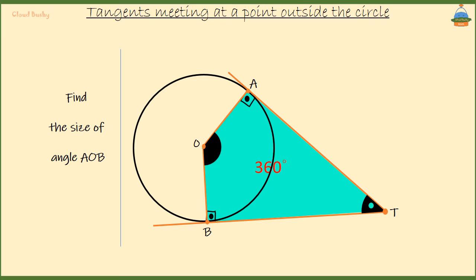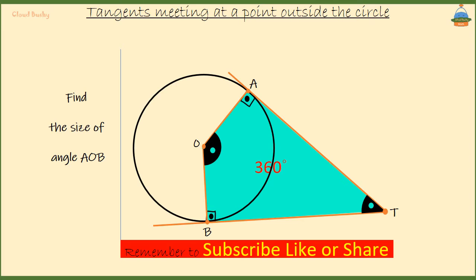these two angles ATB and AOB must add up to 180 degrees if we are to have a total of 360 degrees in the quadrilateral AOBT.